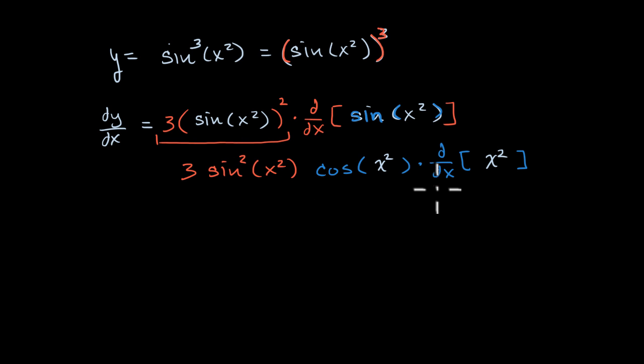All right, so we're getting close. Now we just have to figure out the derivative with respect to x of x squared. And we've seen that many times before. We just use the power rule, that's going to be 2x.